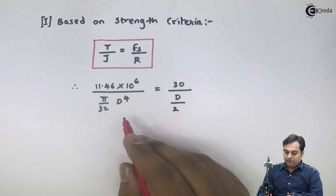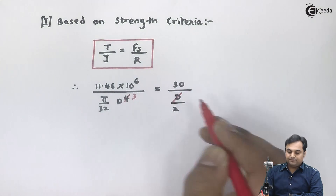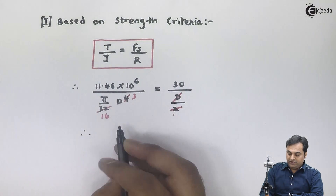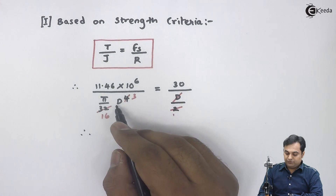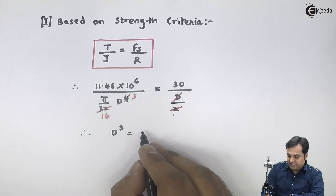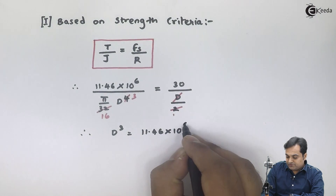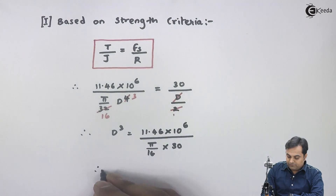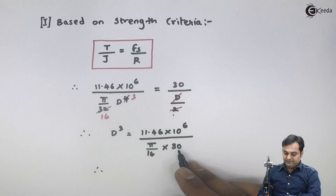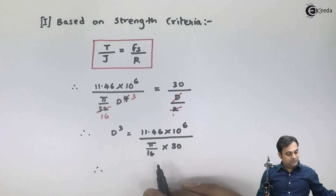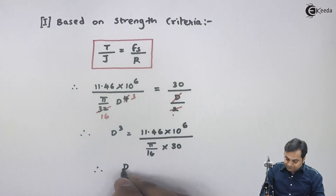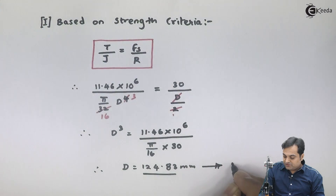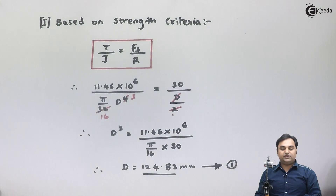From the left-hand side and right-hand side, d terms cancel. Therefore d³ = 11.46×10⁶ / (π/16 × 30). Taking the cube root of numerator divided by denominator, d comes out to be 124.83 mm. I will call this equation number one.